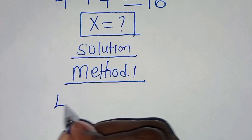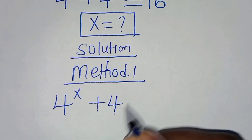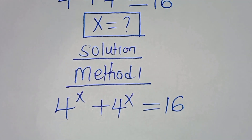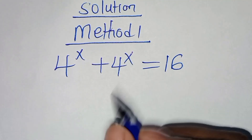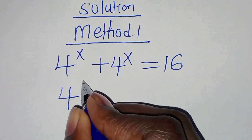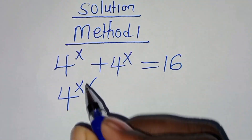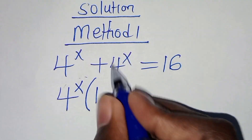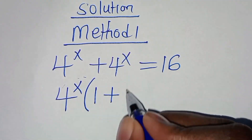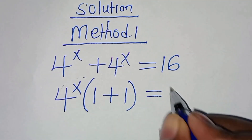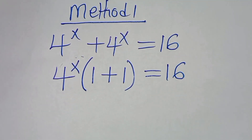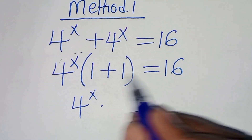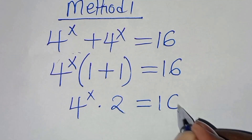We have 4 to the power x plus 4 to the power x, equal to 16. You find that 4^x is common here, so we can factor out 4 to the power x, so that 4^x divided by 4^x is 1, plus 4^x divided by 4^x is 1. This implies that this is 4 to the power x times (1 plus 1), which is 2, and this is equal to 16.